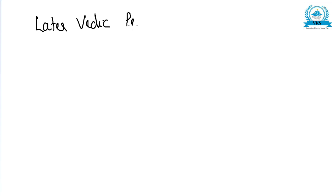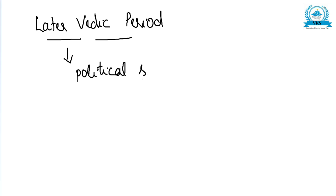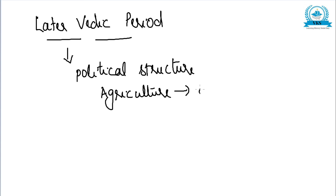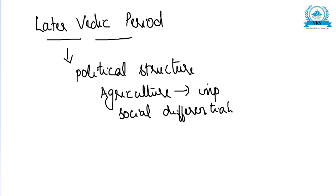Today's video is the continuation of points regarding the Later Vedic Period. The Later Vedic Period witnessed significant changes in the political structure, which were closely related to the growing importance of settled agriculture. During this period, the growing importance of settled agriculture started, and consequent social differentiation also began.